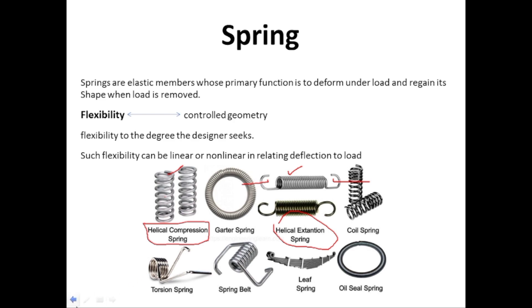This is the leaf spring, which you may have observed in cars and other vehicles — it is used to take the load of the vehicle. This is the torsion spring; upon exertion of force there will be torsion in the spring. You might have seen it in cloth clamps used to hang clothes outside to dry, and it is also used in paper clamps in exam halls.